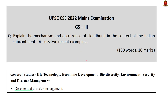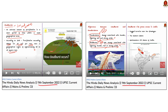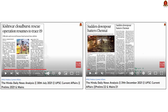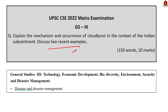Question number 8 in GS Paper 3: 'Explain the mechanism and occurrence of cloudburst in the context of the Indian subcontinent. Discuss two recent examples.' In our 11th September 2022 Hindu News Analysis, we covered all aspects of cloudburst — formation, risk-prone areas in India, why forecasting is difficult, and consequences. For two recent examples, we discussed the Kishtwar cloudburst in our 30th July 2021 Hindu News Analysis and the Chennai cloudburst in our 31st December 2021 Hindu News Analysis. Using our discussions, you can address this question in its entirety.